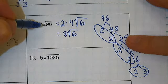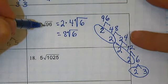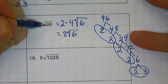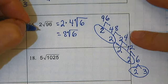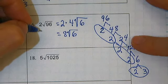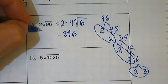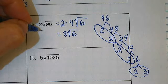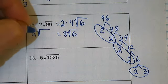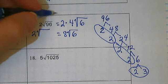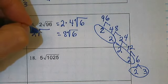Another way to write the square root of ninety-six is two times the square root of ninety-six.